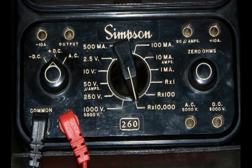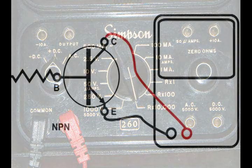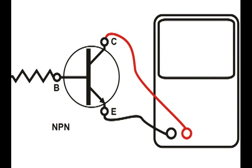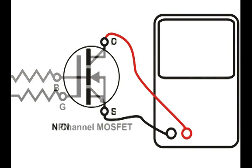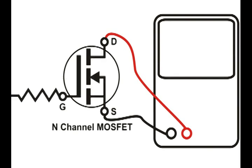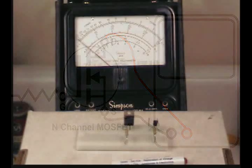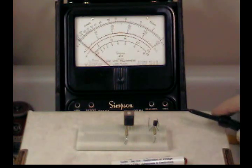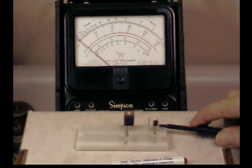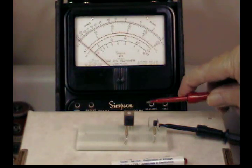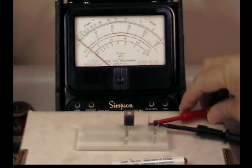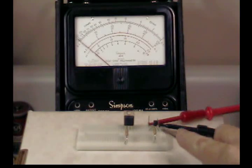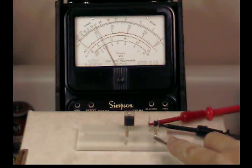The Simpson meter is going to be set at R times 10,000. This is how I'm going to connect the meter to the NPN transistor and then to the N channel MOSFET transistor. I'm going to hook up the Simpson meter. That's the E connection, and here is the C connection. When I touch the base, we do get the transistor to conduct.